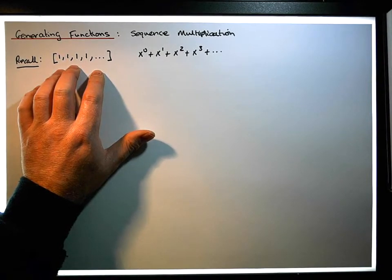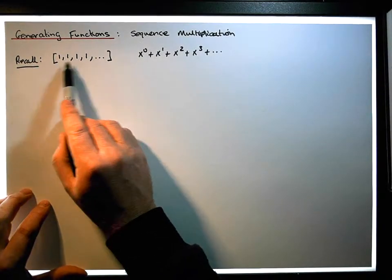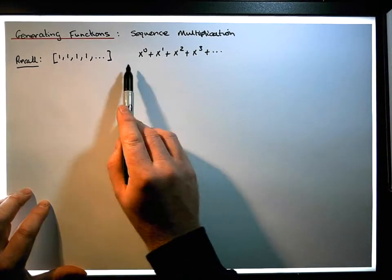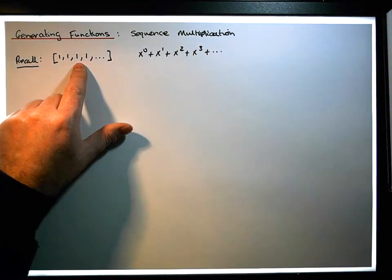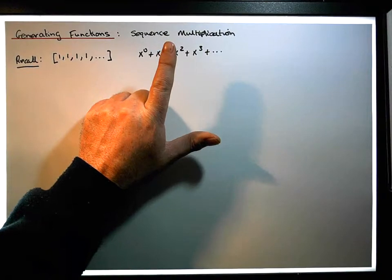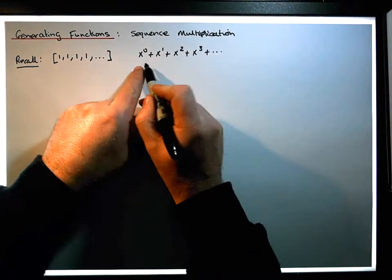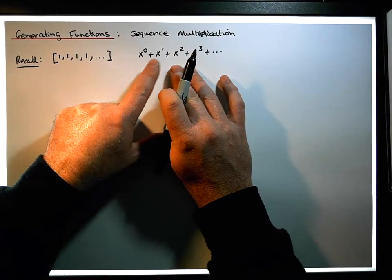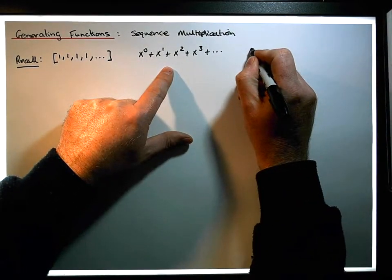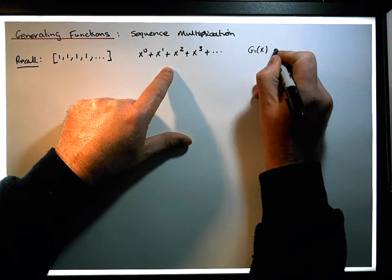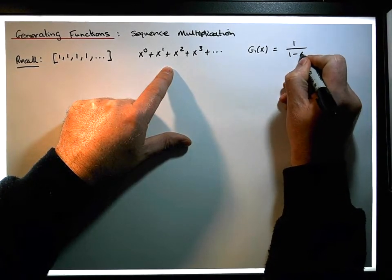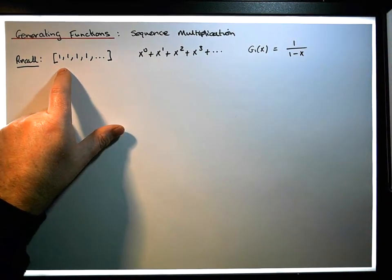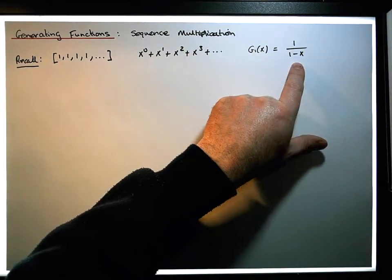We also know that when we sum this particular series to infinity, we end up with a function — the generating function. So for a sequence we have an associated power series, and for a power series we have an associated function. In a previous video I showed that the generating function for this power series — which represents this sequence — let's call it g1(x), is simply equal to 1 over 1 minus x.